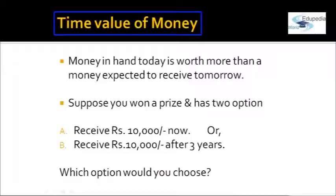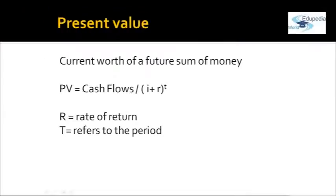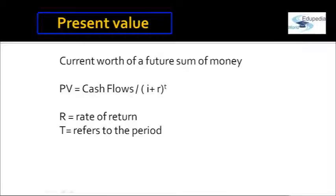If you have to receive 10,000 after three years, the present value of that 10,000 must be less than 10,000 because you are receiving it in the future. To compute the present value, you discount by the expected minimum desired rate of return. Mathematically, present value equals cash flows divided by (1 + R) to the power T, where R is the required rate of return and T is the time period — in our example, three years.